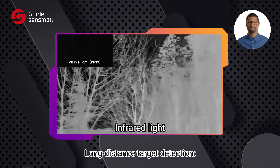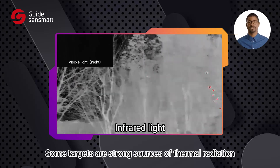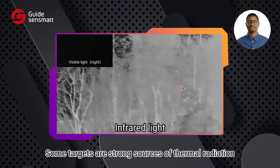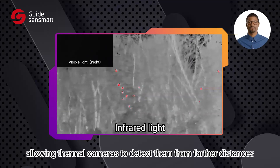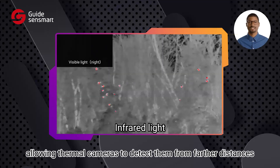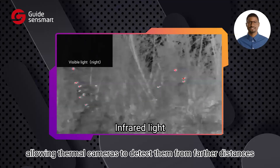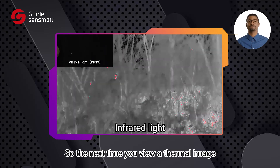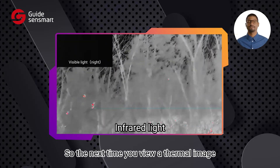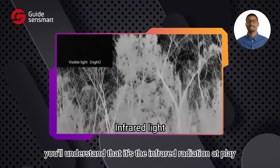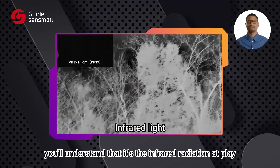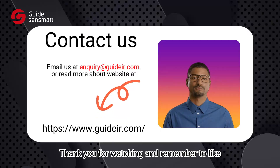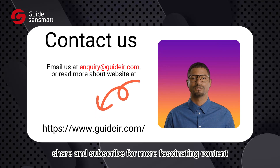Long-distance target detection: some targets are strong sources of thermal radiation, allowing thermal cameras to detect them from farther distances compared to visible light. So the next time you view a thermal image, you'll understand that it's the infrared radiation at play. Thank you for watching, and remember to like, share, and subscribe for more fascinating content.